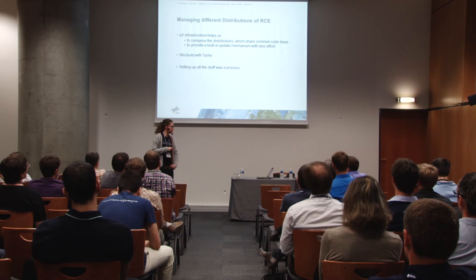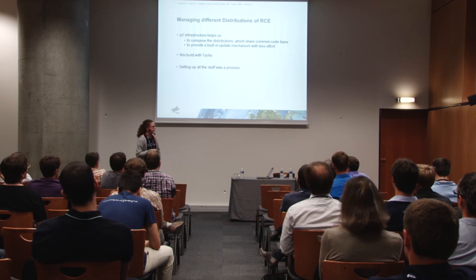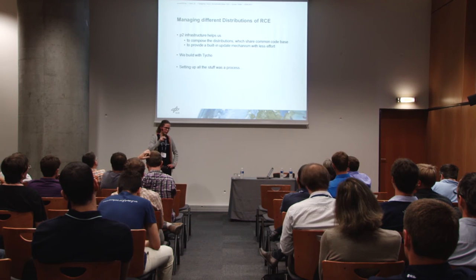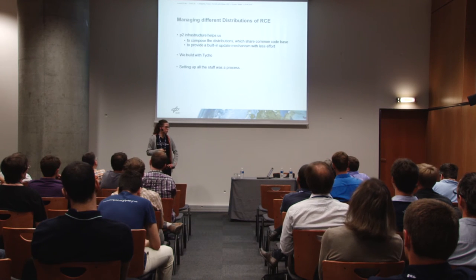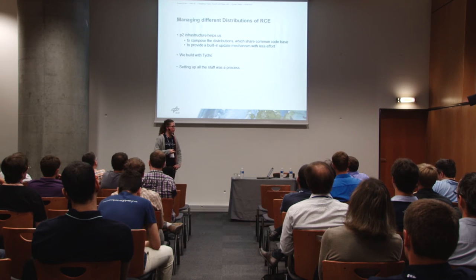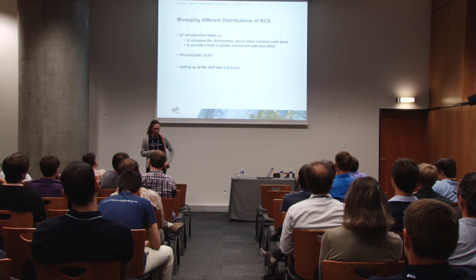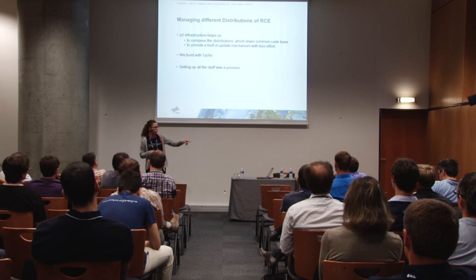The technology behind that is heavy use of the P2 infrastructure. P2 was very helpful to compose distributions that share a common code base — the RCE core layer — and which provide a built-in update mechanism to end users without us implementing any line of code. We built the whole process with Tycho Maven plugins. Setting up all of this was a process in itself: we wanted to click one button and have all three distributions built automatically with Jenkins. A colleague of mine, Robert, had a talk at EclipseCon Europe about the distribution and build process specifically.